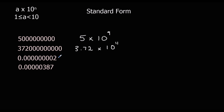The number between 1 and 10 is 2. This time we're going to divide by 10, so it's a negative power. Going back 1 to get to 0.2, 2 to get to 0.02, then 3, 4, 5, 6, 7, 8, 9 times. So it's 2 times 10 to the power of minus 9.